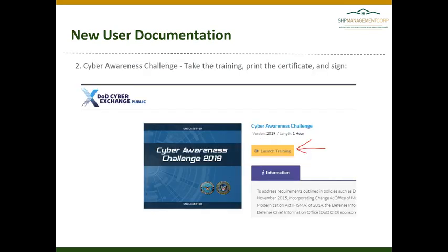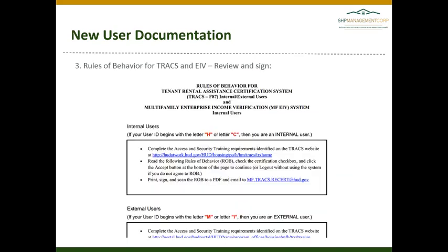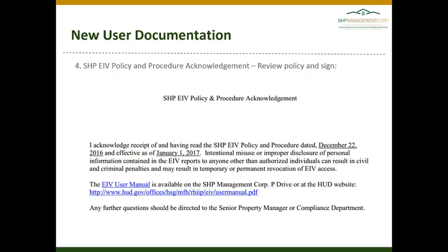The second item is the Cyber Awareness Challenge, which is a federal requirement. Use the link in the instructions document that Courtney has sent to access the training. Be sure that you are connected to a printer when you go to do the Cyber Awareness Challenge, as you cannot go back and reprint the certificate. Print that certificate, sign it, and submit a copy to the corporate office. For the Rules of Behavior for TRACS and EIV, please review, sign, and upload all pages to this Smartsheet.